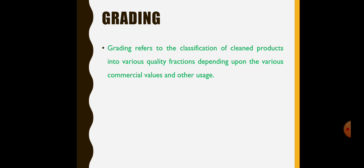Grading is one of the important unit operations of agricultural processing which falls under the cleaning category. Grading refers to the classification of clean products into various quality fractions depending upon various commercial values and other usage. After cleaning, we basically do the grading. This grading is done on the basis of market values, commercial values, and the specific uses of the clean product. This whole classification is done on the basis of varied quality fractions depending upon the commercial values and the importance of the commodity in different markets.